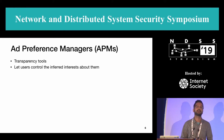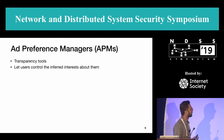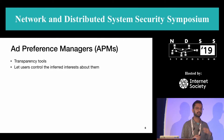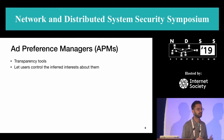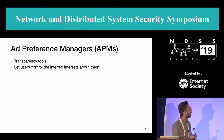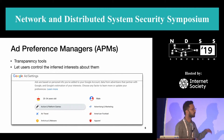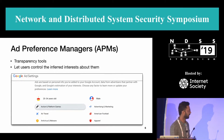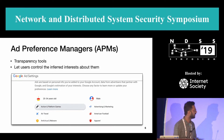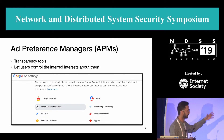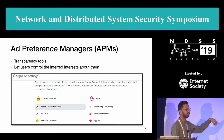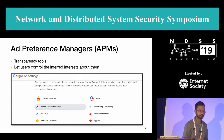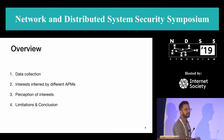To this end, we use ad preference managers, which are transparency tools provided by these companies that let users control some of the inferences and interests they want to see targeted ads on — or not see targeted ads on. For example, this is a screenshot from Google Ad Settings. Here Google has made some inferences about me: my age range, gender, and some activities I'm interested in. I can technically go and remove some of these inferences from my profile.